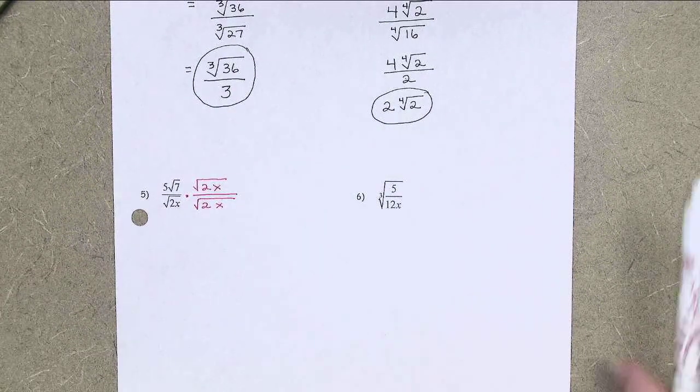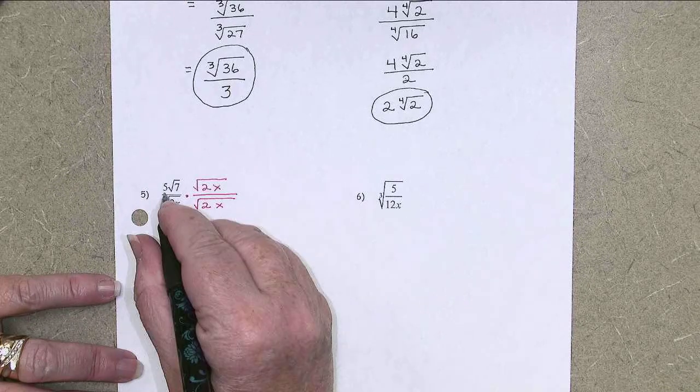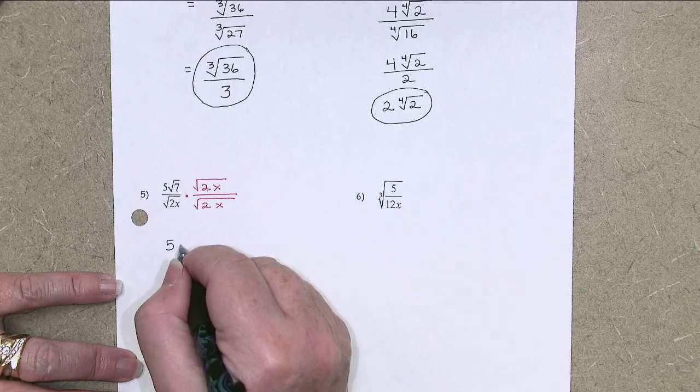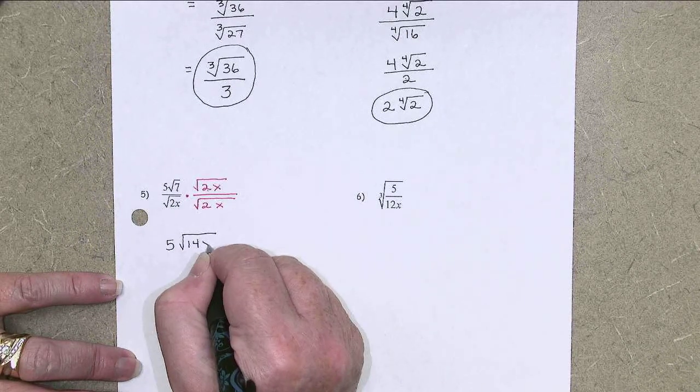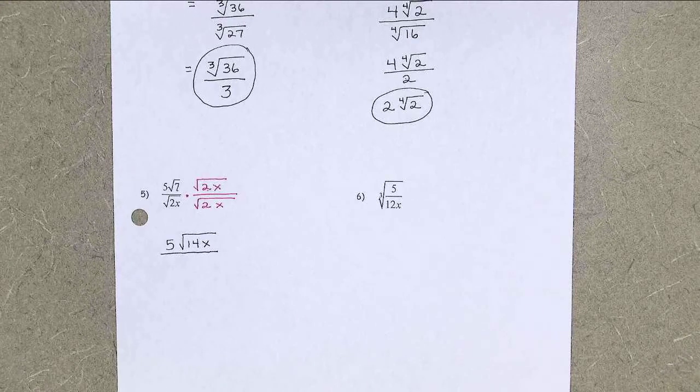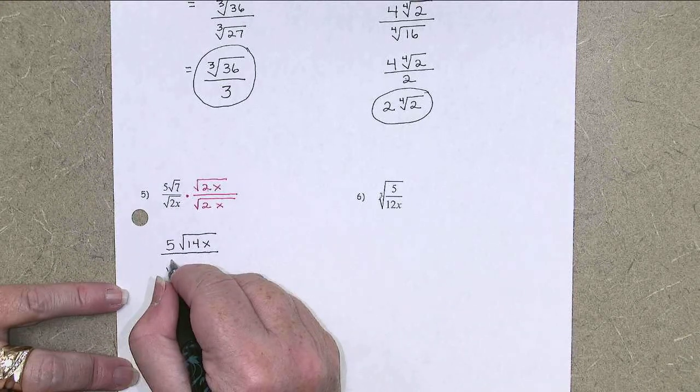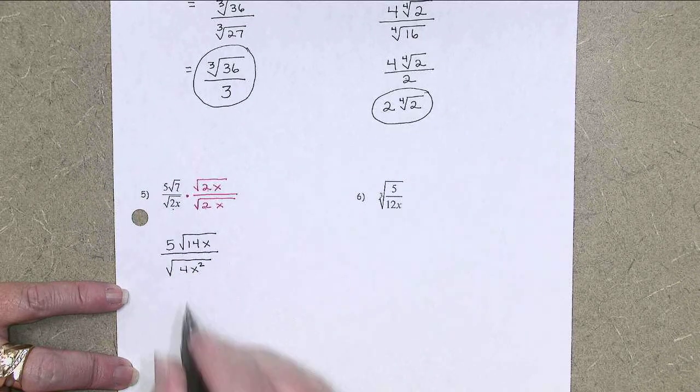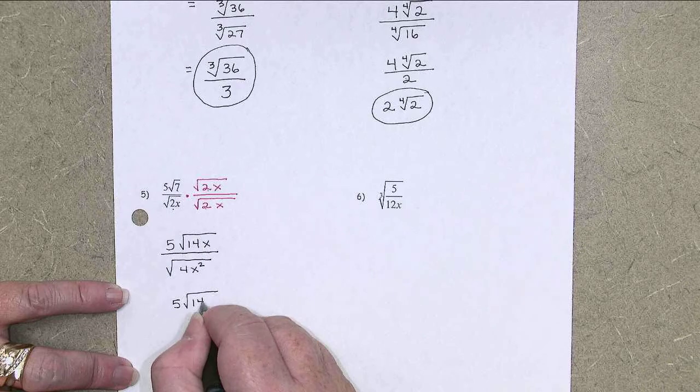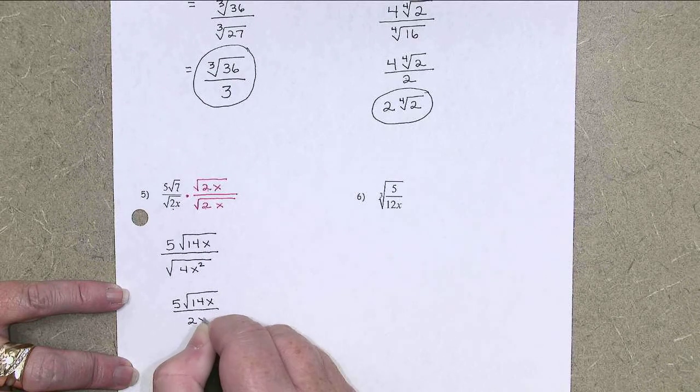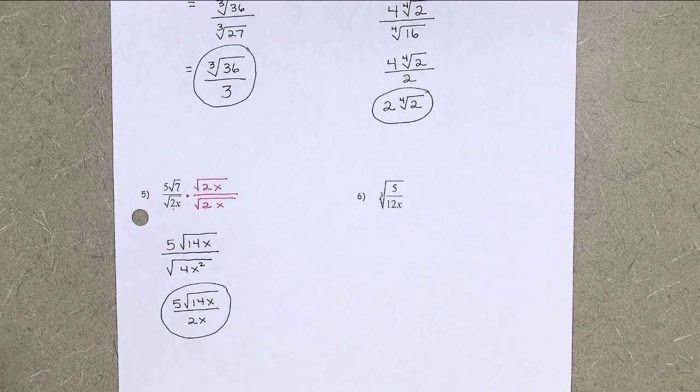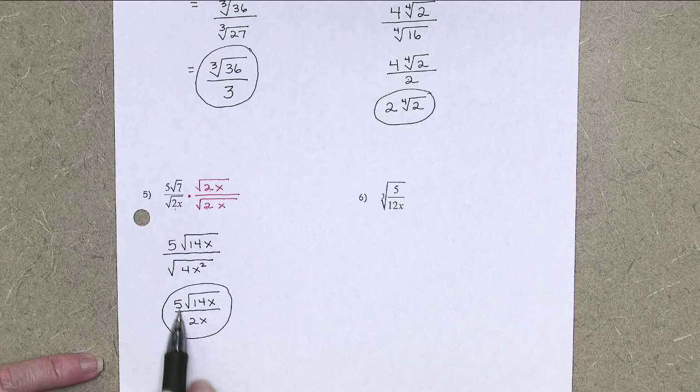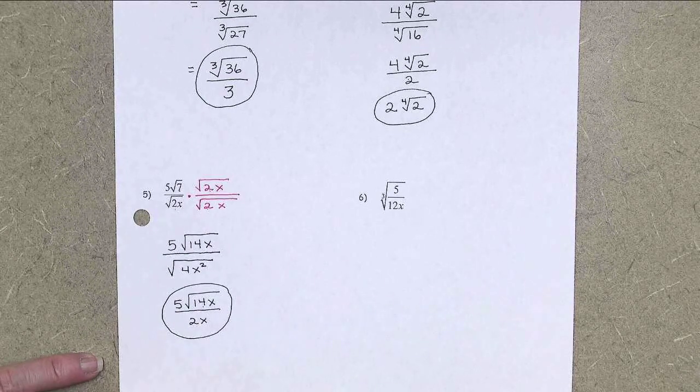Of course, doing the same thing on the top. The 5 stays outside the radical, but I can multiply the numbers under the radical. Square root of 14x. On the bottom, square root of 4x squared, which is really just 2x. You can tell I'm done. I already circled my answer, but notice the 5 and the 2 can't be reduced. 14 is under the radicals, so I can't reduce it with a 2.